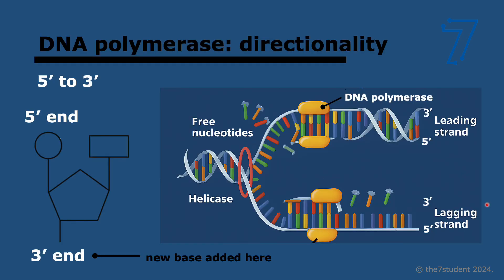Now we need to look at directionality. In a DNA strand, all nucleotides have two covalent bonds — between the phosphate and the next sugar, and between the sugar and the next phosphate. One terminus is called the three prime end, and the other is the five prime end, based on the carbon numbering of the sugar. DNA polymerase works in the five prime to three prime direction, meaning the five prime phosphate of a free nucleotide is linked to the three prime end of the growing strand.